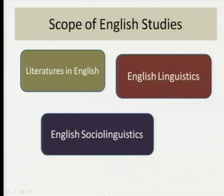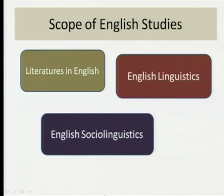In the last lecture, if you were to summarize and point out three or four important areas, the things that come to mind immediately when you talk about English studies — we could zoom in on three areas, and these are in random order: literatures in English, English linguistics, and English sociolinguistics. These are the three areas that a teacher would have to talk about first when discussing English studies.